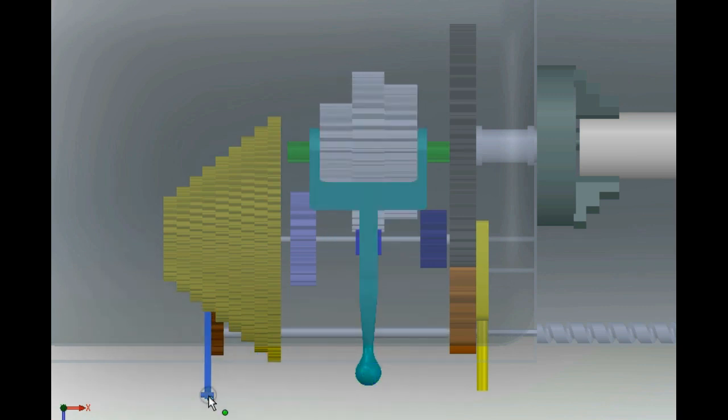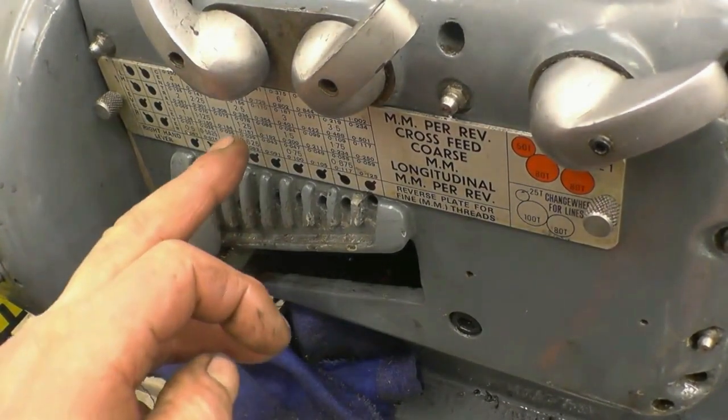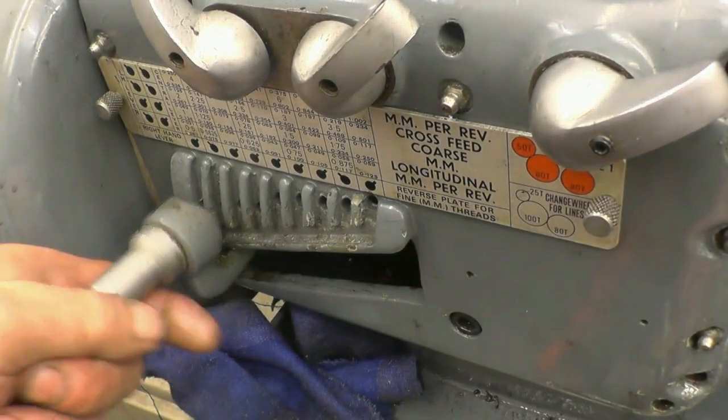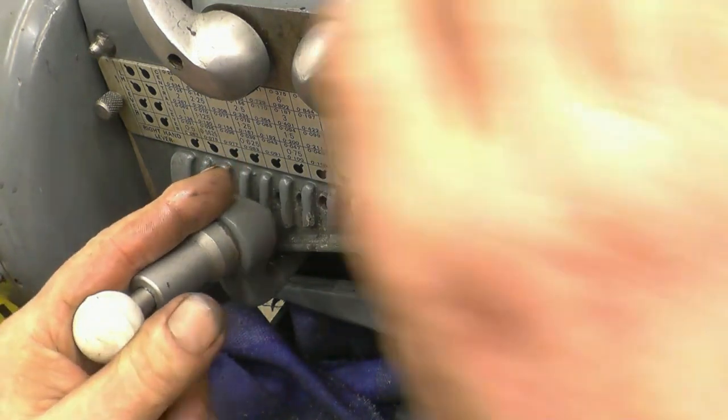The lathe generally has a table of the threads that can be cut and which combinations of the gears will give the desired pitch. So by engaging the proper gears or clutches we can get the required threads.